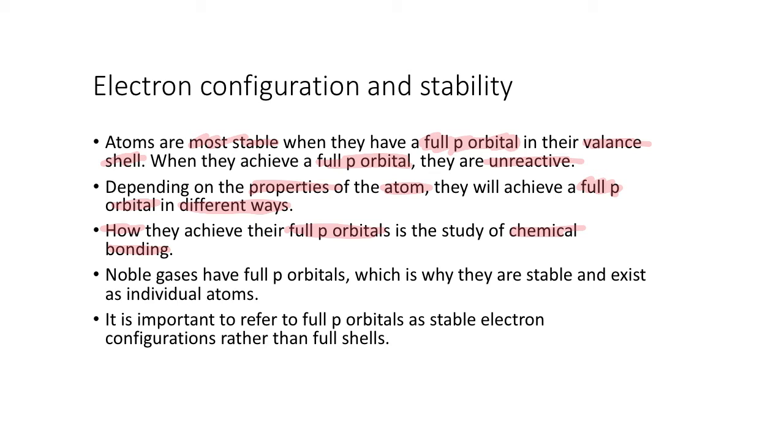Noble gases—you've heard of group 18 noble gases already—they already have full P orbitals, which is why they are stable, and they exist as individual atoms because they don't have to bond with anyone else to get their full P orbitals.